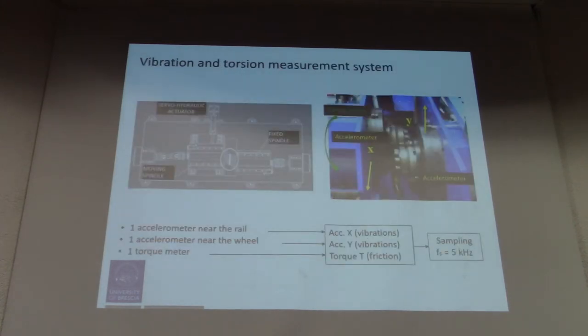On the test bench is also mounted a vibration and torsion measurement system. We acquire one accelerometer on the rail, which is the X vibration, one accelerometer near the wheel, which is the Y acceleration, and we have a torque meter.